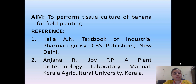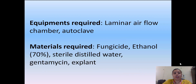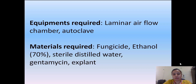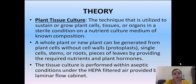The references I have taken are from the textbook of Industrial Pharmacognosy by author Kalia sir, and next is a Plant Biotechnology Laboratory Manual written by Anjina and Joy. Equipment required for today's experiment shall be laminar air flow cabinet and autoclave. The chemicals required are fungicide, 70% ethanol, sterile distilled water, gentamicin antibiotic, and explant.